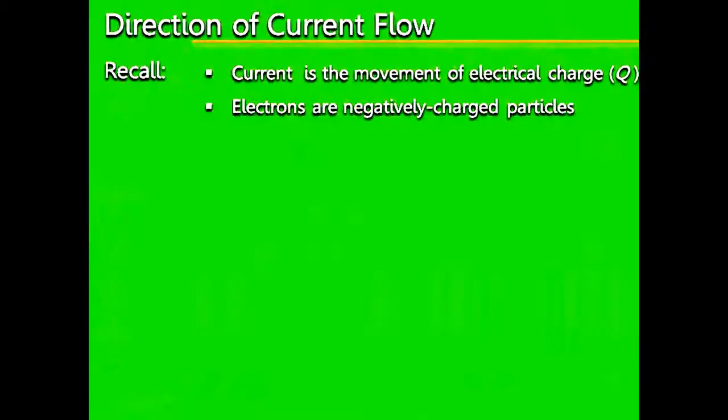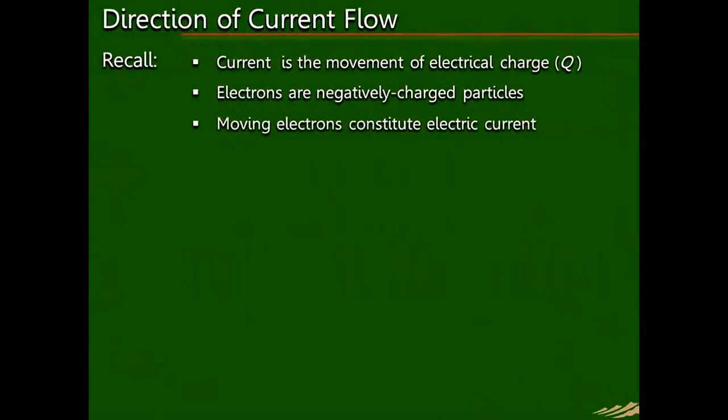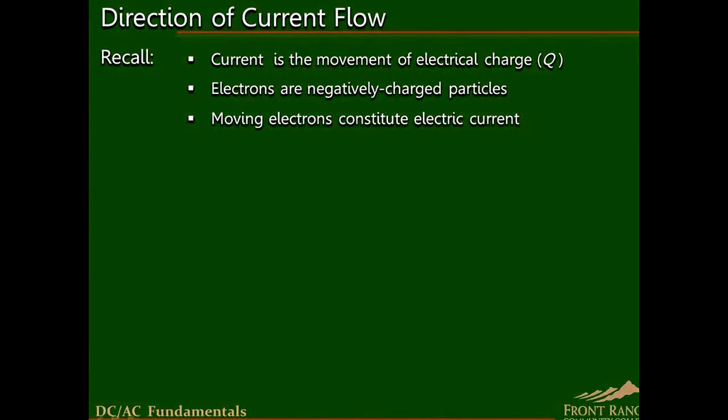Now we will define the direction of current flow in an electric circuit. First, recall that current is defined as the movement of charged particles. Electrons are charged particles, so when electrons move in a circuit, this constitutes current flow.